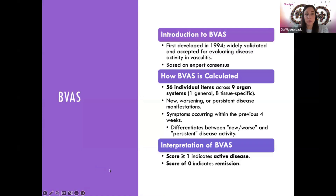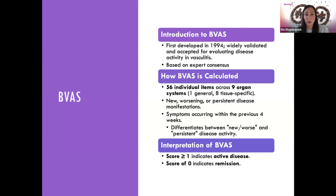Before we talk about how it can affect different organ systems and then focus more on the kidney itself, I wanted to bring up the Birmingham Vasculitis Activity Score — the BVAS, as it's called. It is a score that was developed back in the 90s, and it's been validated and accepted for use in disease activity, looking for active or persistent disease in patients with vasculitis. It is based on expert consensus, but it is something that's been used in clinical trials to assess whether a patient has active disease and whether they've gone into remission.